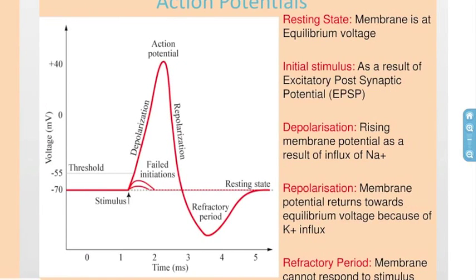An action potential is a rapid reversal in the voltage of the cell. We have a resting phase where the membrane is at an equilibrium voltage of minus 70 mV. We then have an initial stimulus which is a result of an EPSP. This leads to depolarization, which is a rising membrane potential as a result of an influx of sodium ions. After the peak, we have repolarization, which is when the membrane potential returns towards the equilibrium voltage due to potassium ion influx. This is a result of closing of sodium channels that opened during depolarization and the opening of new potassium channels.